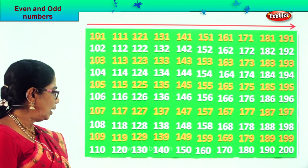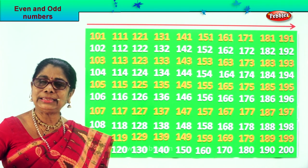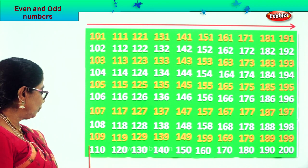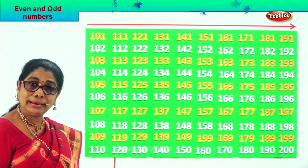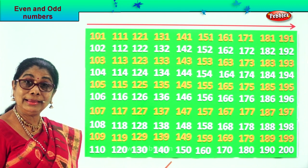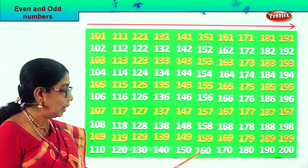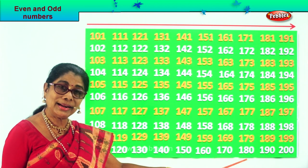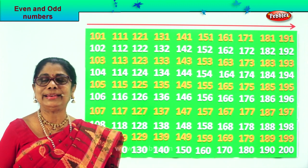Finally, all numbers ending in 0: 10, 20, 30, 40, 50, 60, 70, 80, 90, 100. Then beyond that, all numbers ending in 0: 110, 120, 130, 140, 150, 160, 170, 180, 190, 200.